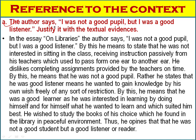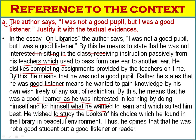Question I: The author says 'I was not a good pupil, but I was a good listener.' Justify it with textual evidence. In the essay 'On Libraries,' the author means to state that he was not interested in sitting in classes receiving instructions passively from teachers, which passed from one ear to another. He disliked completing assignments provided by teachers on time — that is what he means by not being a good pupil. Rather, he was a good listener, meaning he wanted to gain knowledge by his own free will without restrictions, learning by doing for himself what he wanted to learn, which suited him best. He wished to study books of his choice in the library's peaceful environment. Thus he was not a good student but a good learner.